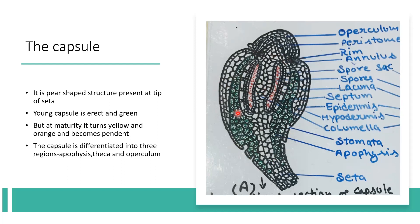This young capsule is green in color, but at maturity it turns yellow and orange. As seen in the first figure, it is drooping downward and has regions called apophysis. The seta is below, then it expands into the apophysis, and the middle thick part is called the theca. The cap-like upper part is called the operculum.